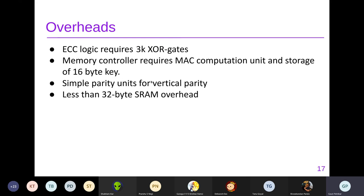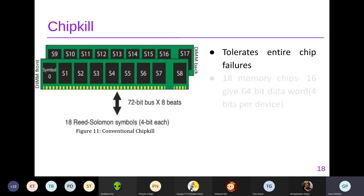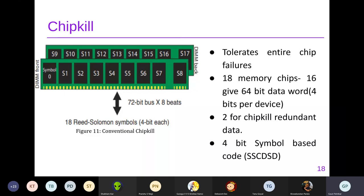Next, we look at ChipKill, another security system generally used for servers. It works at the chip level and can tolerate entire chip failures, correcting one faulty chip. It achieves this using 18 memory chips — 16 hold data — providing 4-bit symbols per device. ChipKill operates as a single-symbol correction and double-symbol detection system.